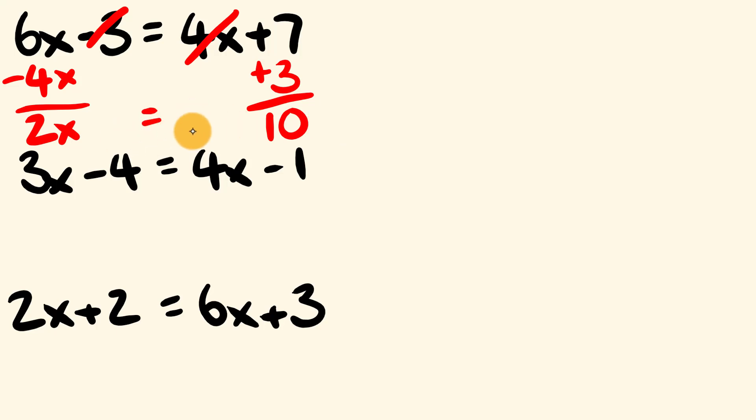We have 2x is equal to 10. Therefore x is going to be equal to 10 divided by 2 which is 5. x equals 5. How'd you go with that one?